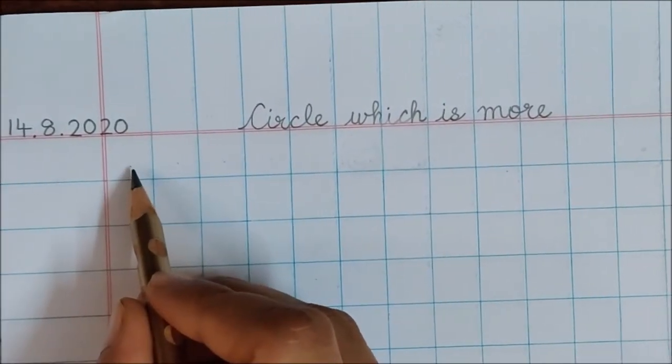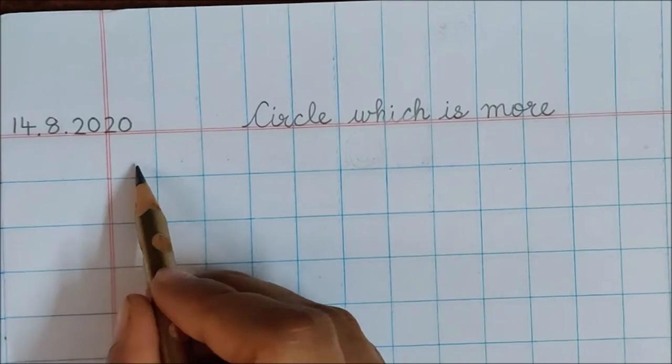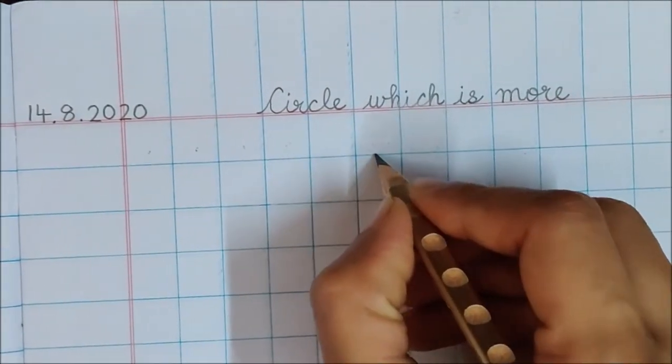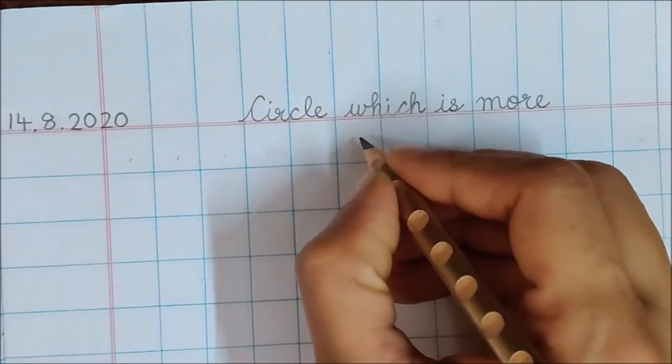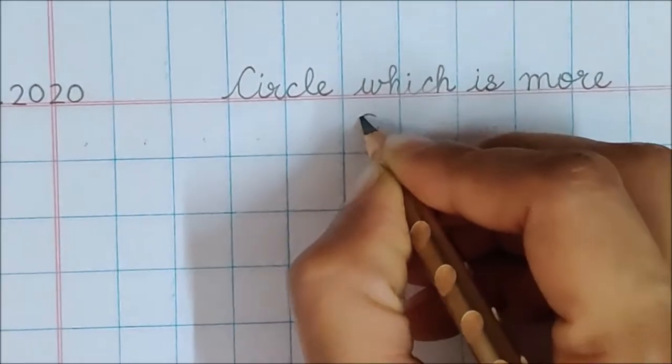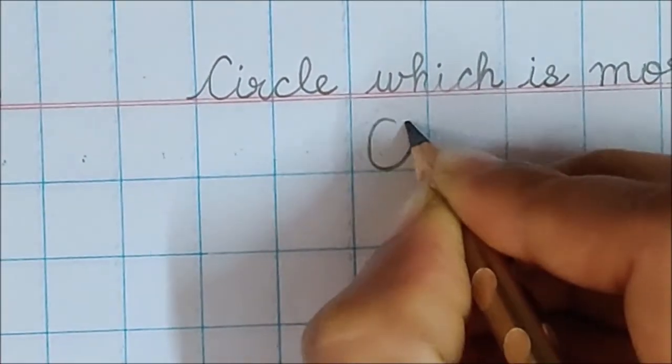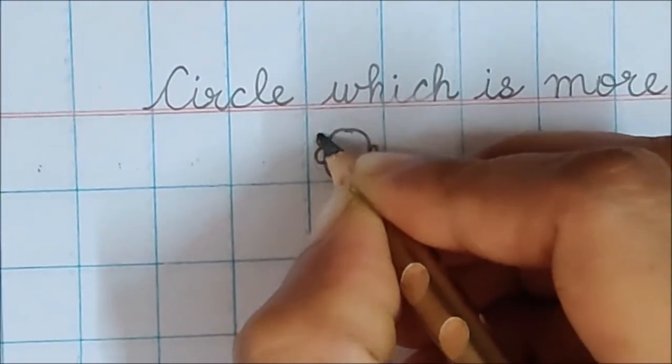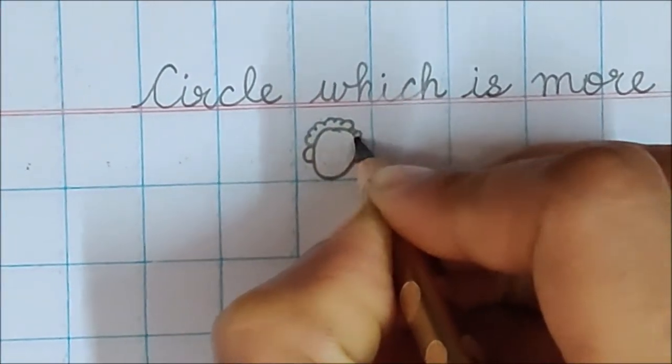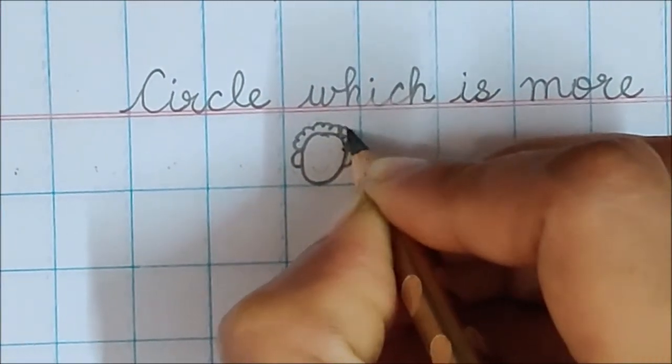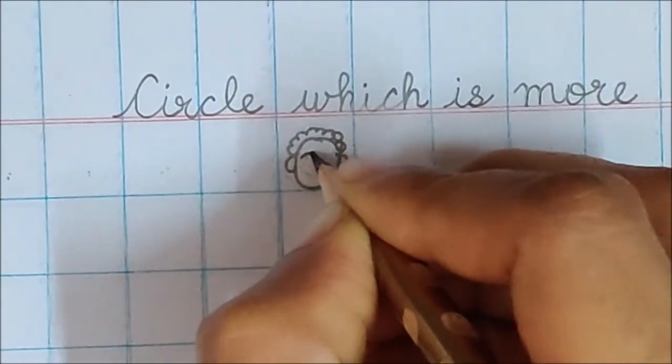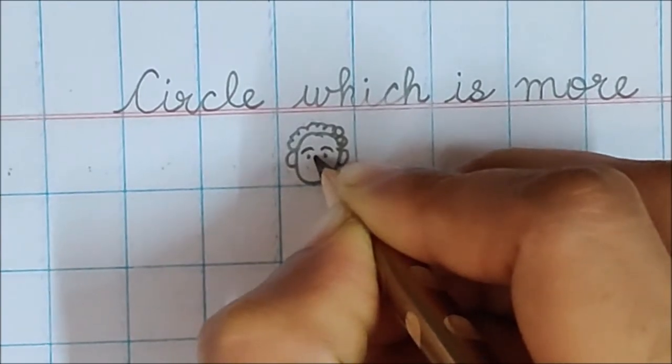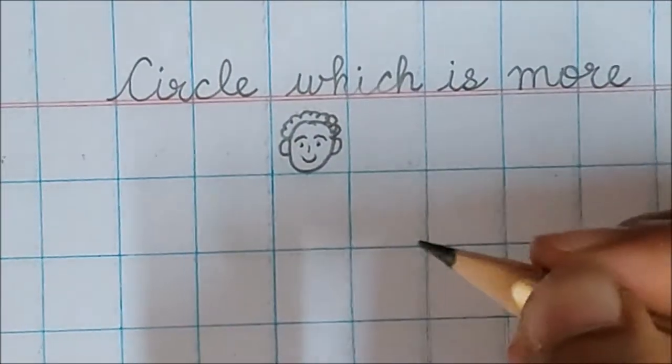Leave 5 boxes from the margin. 1, 2, 3, 4, 5. Now in the sixth box, draw your papa. I am drawing the face of papa. These are the ears, hair, eyebrows, eyes, nose and lips.